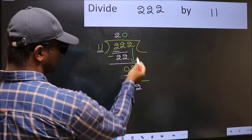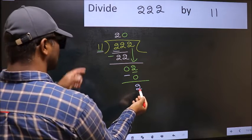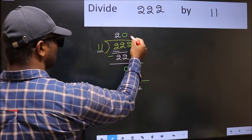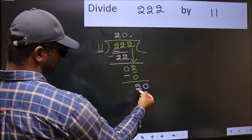Over here, we did not bring any number down. And, 2 is smaller than 11. So, now you can put dot and take 0. So, 20.